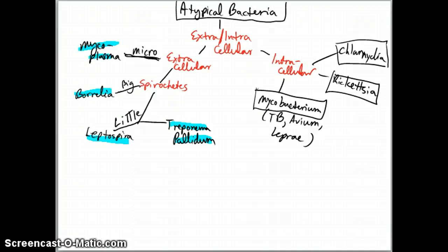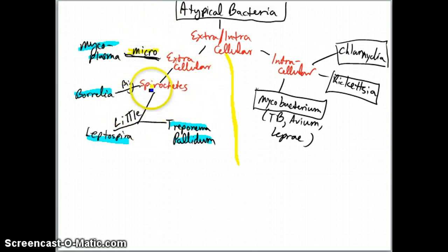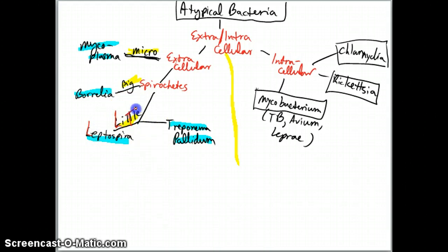Atypical bacteria. We're going to start getting into some extracellular versus intracellular stuff. Let's draw a line here to demarcate that. Extracellular first - you're going to have the micro extracellulars, then down here the spirochetes, which are your bigs and your littles. When you think little: L for Leptospira, T for Treponema pallidum. Borrelia - B for big, and Mycoplasma - M for mycum.